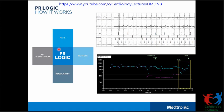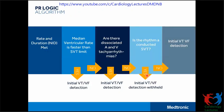PR Logic works on four criteria: it looks at rate, the pattern of A and V, the regularity of ventricular intervals, and AV dissociation. In this example, the RV Tip to RV Ring EGM shows ventricular rates higher compared to the atrial EGM, suggesting a possible ventricular tachyarrhythmia. Also, looking at the onset of this rhythm, it occurs quite abruptly. Upon meeting the rate criteria and NID, it checks the median ventricular rate relative to the SVT limit.